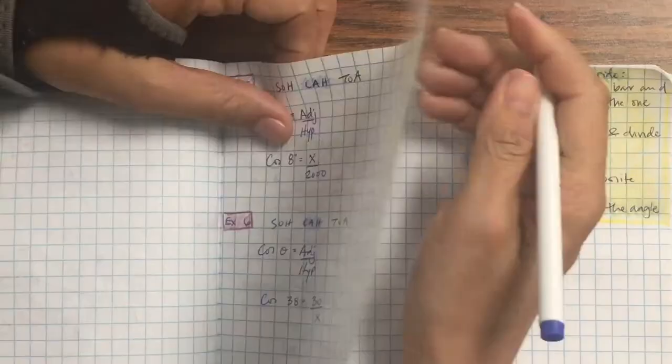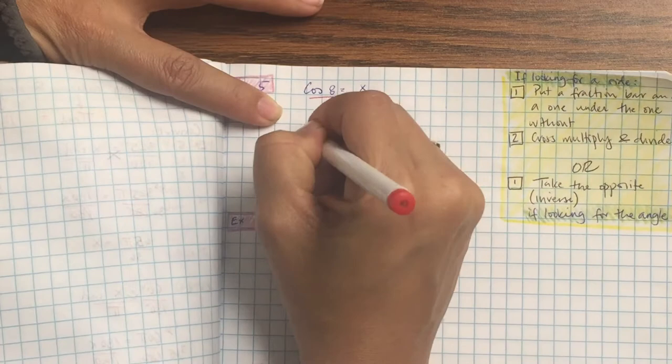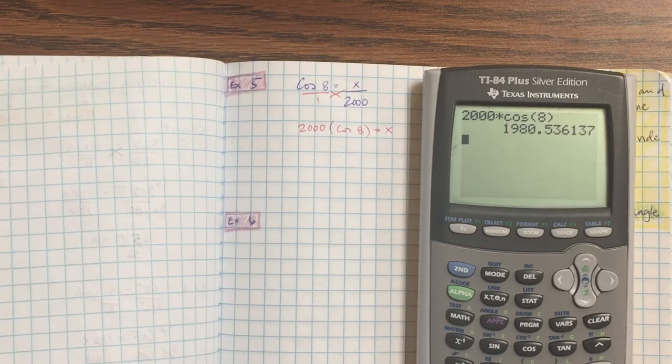Number 5. Copy it down. Cosine of 8 equals x over 2,000. We're not looking for an angle, so this one you're going to put a 1 underneath the 1 without. And cross multiply and divide. So you're going to get 2,000 times cosine 8 equals 1 times x, which is x. Then you can put that in the calculator because you just got x by itself. So 2,000 times cosine 8. And we're rounding to the nearest. This is a listening check. Color in the zeros in the number 2,000 foot.